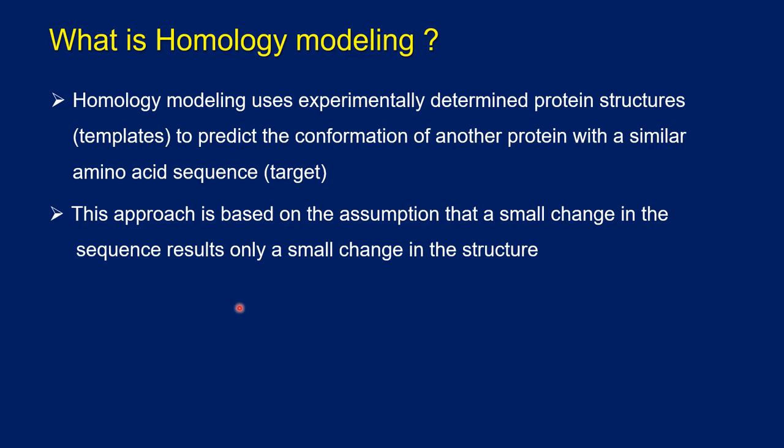Based on the prediction, based on certain similarity criteria, for example if both the target and template sequence - here the target sequence is our protein which is not having a structure and template protein is the protein which is having a structure - if the alignment has more than 30 percent sequence identity, then that protein is taken for 3D model generation.